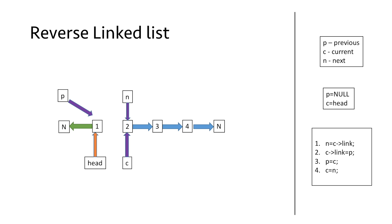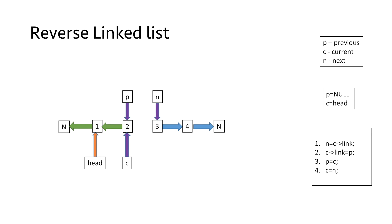We again increment the next pointer by repeating step 1: n equal to the link part of the current pointer, which moves n to node 3. Then we repeat steps 2, 3, and 4 to point node 2 to its previous node, node 1. We make the link part of c equal to p, increment the previous pointer, increment the current pointer by equating it to n, and again perform step 1 to increment n to the next node.